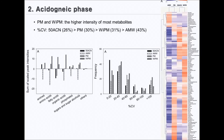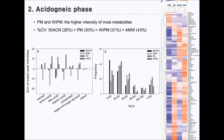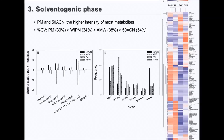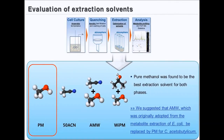In the acetogenic phase, WI-PM and PM yielded higher intensity for most metabolites. In reproducibility tests, 50ACN, PM, and WI-PM were the best solvents. Overall, PM and WI-PM were found to be the optimal solvents at the acetogenic phase. In the solventogenic phase, higher abundance of metabolites was obtained by using PM or 50ACN, and the reproducibility of PM was the highest. Based on the above results, PM was found to be the best extraction solvent.